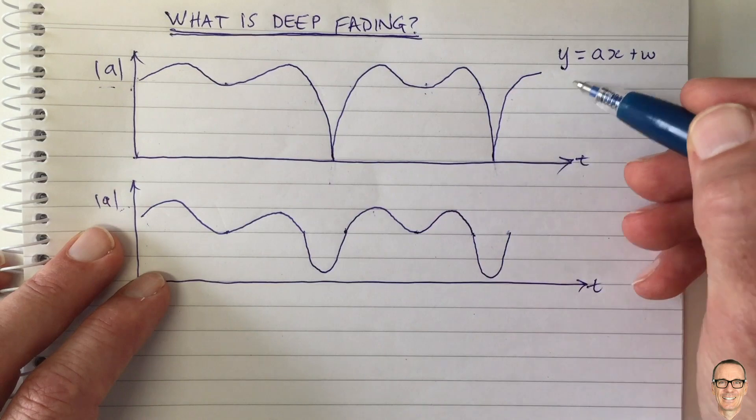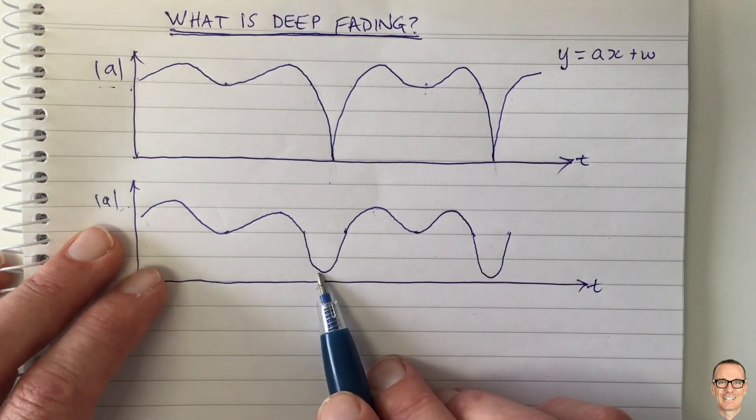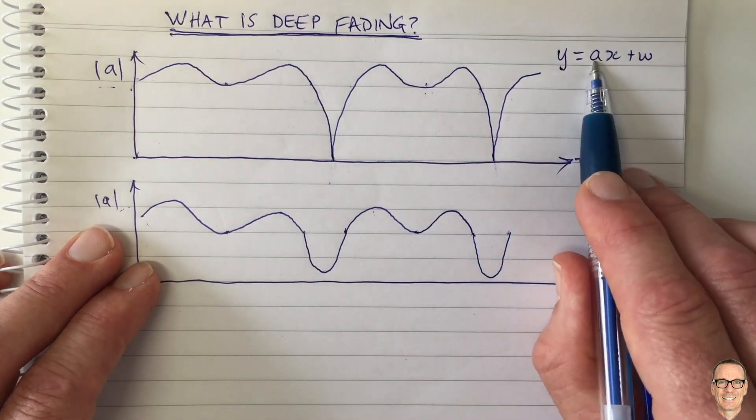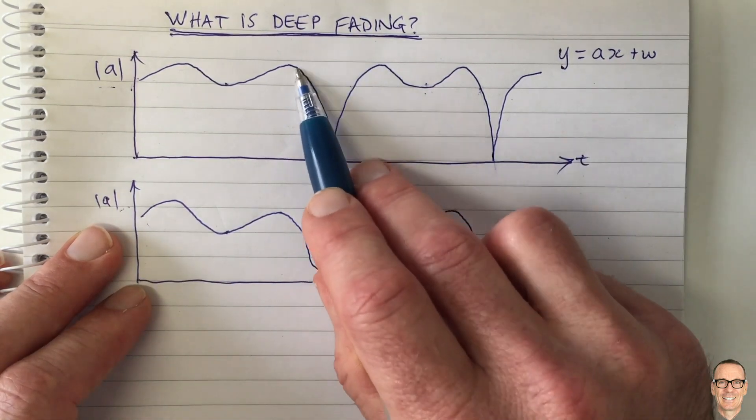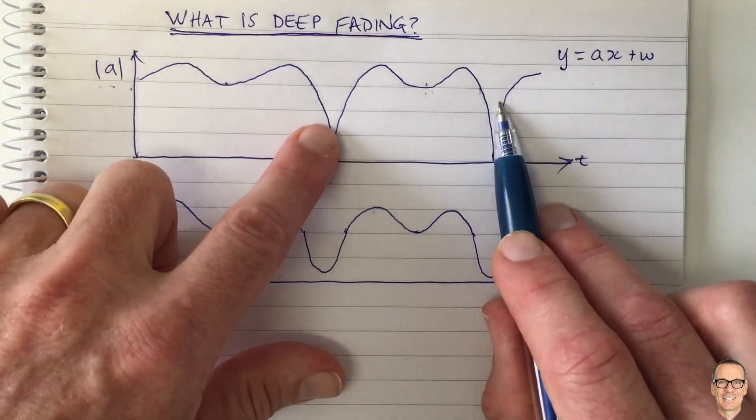So I just want to point out deep fading is really, it is fading when you get destructive interference from all the different paths and the channel gain goes very low, but it doesn't happen suddenly like this picture looks like it happens.